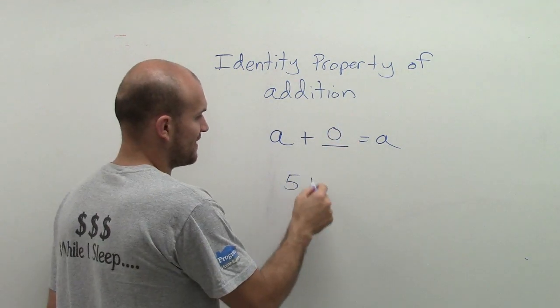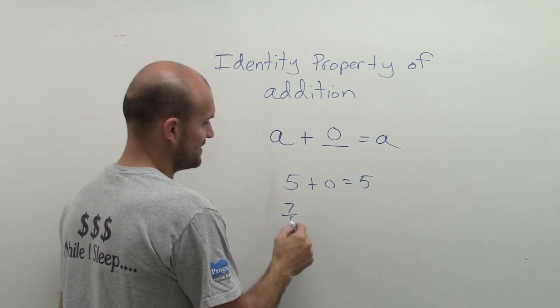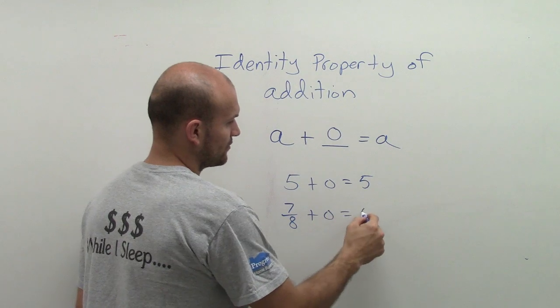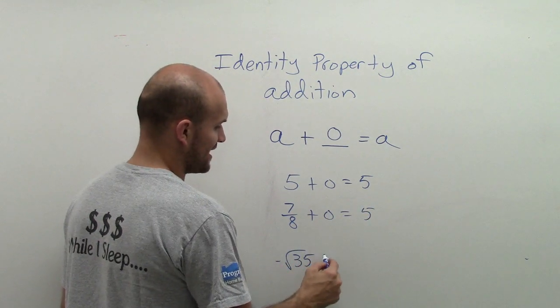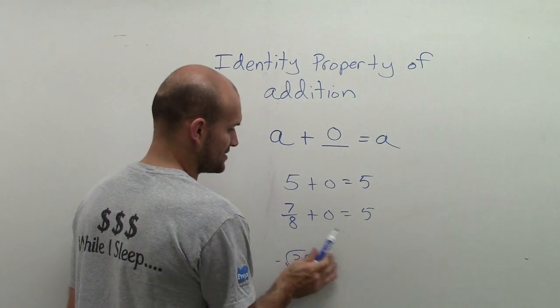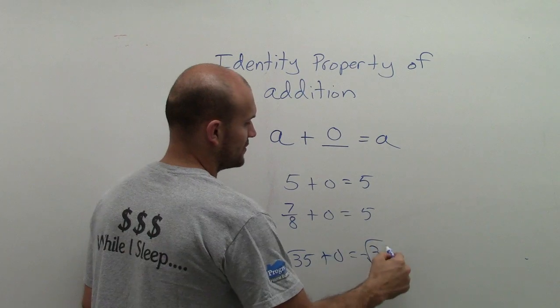Because if you think about it, 5 plus 0 equals 5. 7/8 plus 0 equals 7/8. Negative square root of 35 plus 0 equals negative square root of 35.